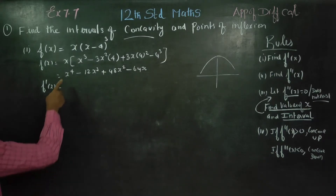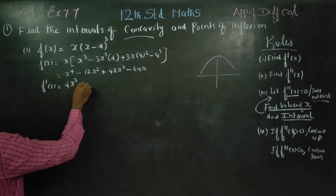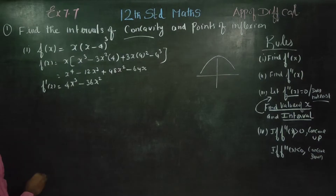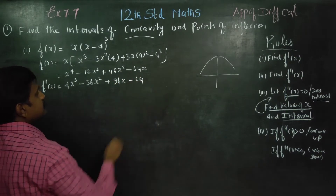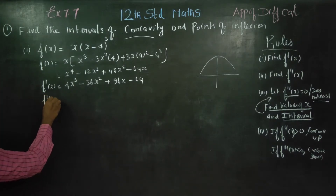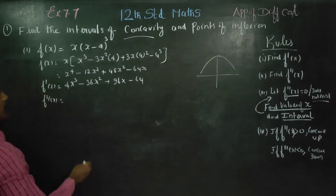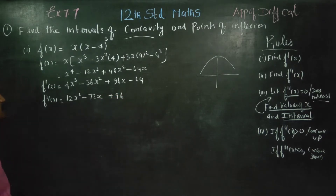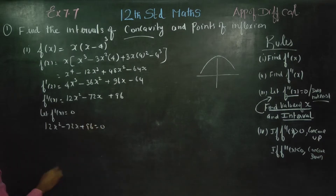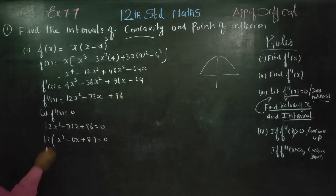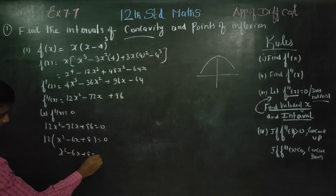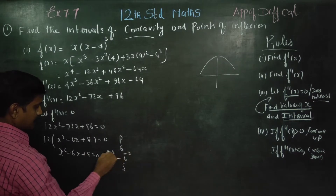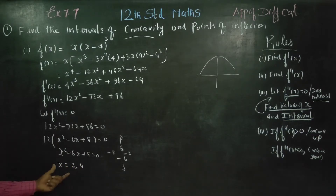Now, f(x) = x(x−4)³. First differentiation: f'(x) = 4x³ − 36x² + 96x − 64. For the second differentiation, f''(x) = 12x² − 72x + 96. Let f''(x) equal to 0: 12x² − 72x + 96 = 0. Taking 12 common: x² − 6x + 8 = 0. Using the product-sum method, factors are (x−4)(x−2) = 0, giving x = 2 and x = 4.